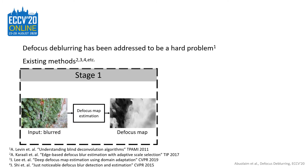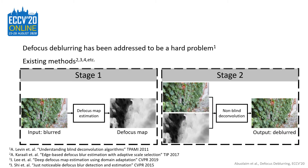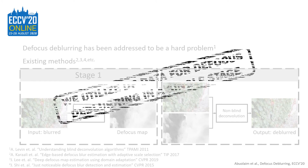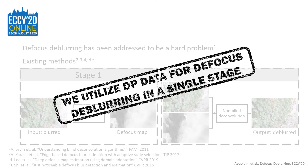Defocus de-blurring has been addressed to be a harder problem, and existing methods address the problem in two stages. The first stage, these methods estimate the defocus map from an input blurred image, as shown here. Then, in the second stage, they use off-the-shelf non-blind deconvolution methods guided by the estimated defocus map in order to de-blur the input image. So, our distinction from the prior work is the use of the DP data available at capture time, where we apply a single-stage defocus de-blurring.